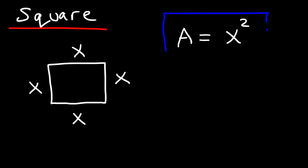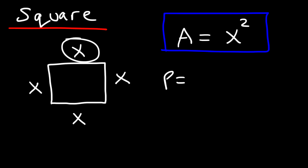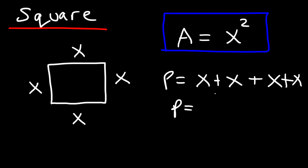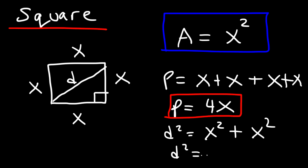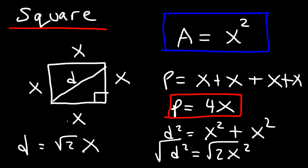The perimeter of a square is the sum of all four sides: x plus x plus x plus x, which is 4x. For the diagonal, since both l and w equal x, d squared equals x squared plus x squared, which is 2x squared. Taking the square root of both sides, the length of the diagonal in a square is x times the square root of 2.